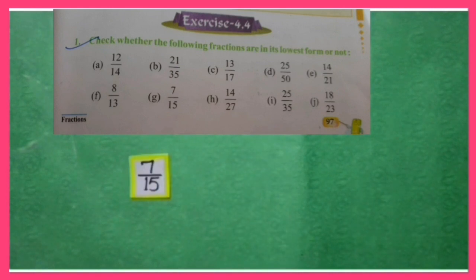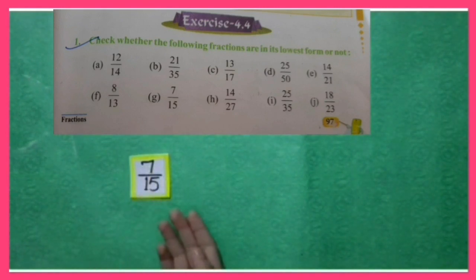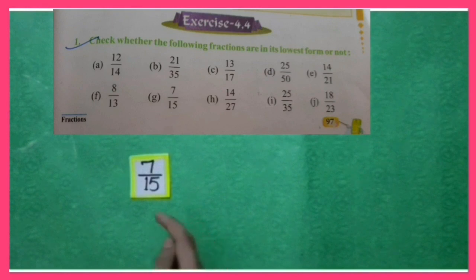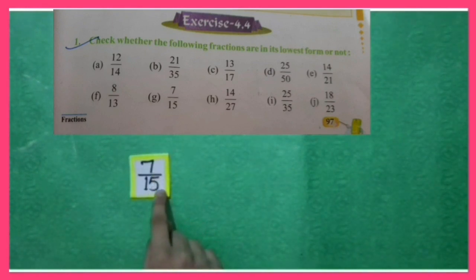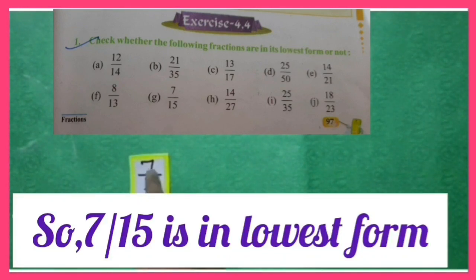Now let us solve part G of question number 1: whether 7 upon 15 is in lowest form or not. In 7 upon 15, both numerator and denominator are not divisible by any number other than 1. So, 7 upon 15 is in its lowest form.